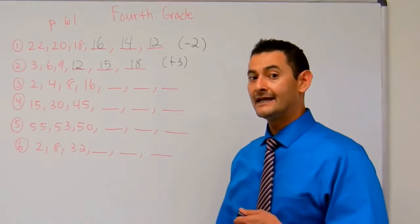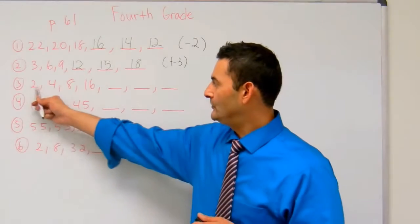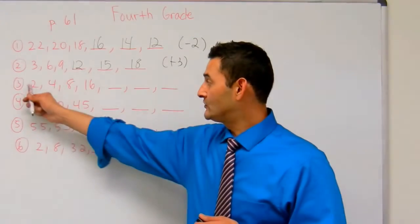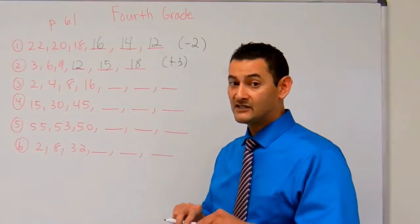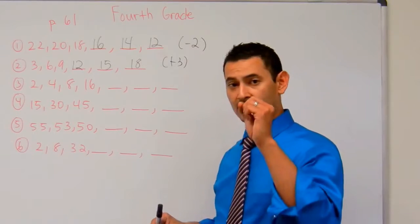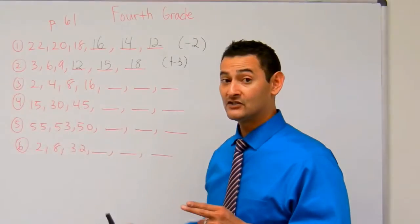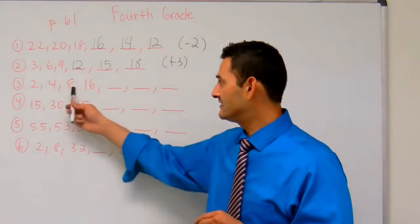Now let's take a look at number 3. Number 3, we have 2, 4, 8, 16. So how did this 2 become a 4? Let's try adding 2. 2, 3, 4, that works. Let's add 2 to this. So 4 plus 2, that's 6. That's not going to work.